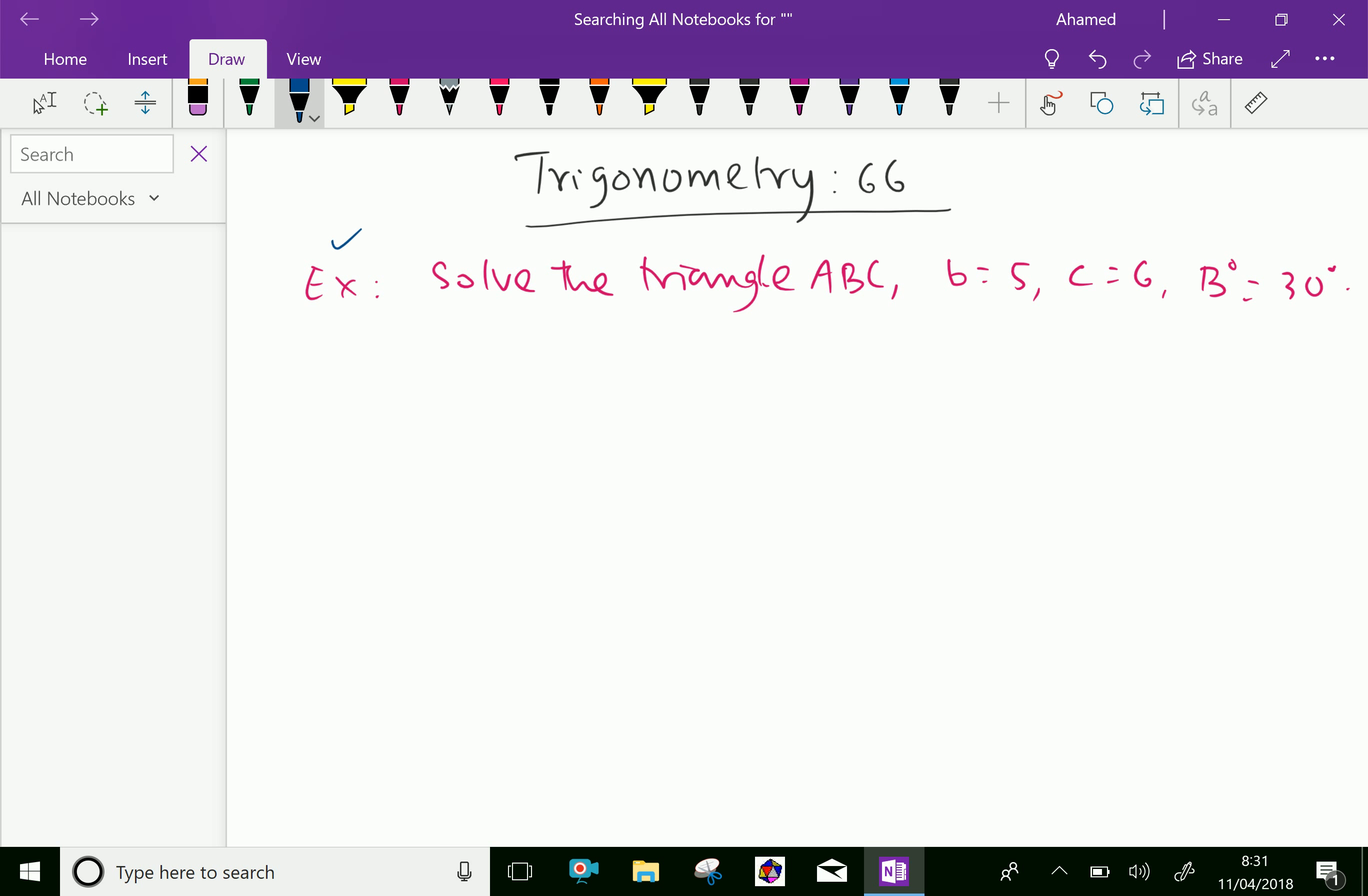Example: solve the triangle ABC where b equals 5, c equals 6, and angle B equals 30 degrees.